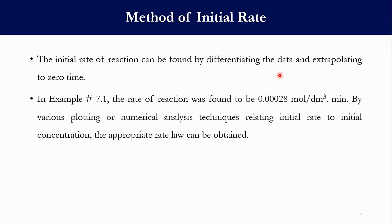For example, in example 7.1 the rate of reaction was found to be 0.00028 mole per cubic decimeter per minute. If we plot it, we have -Ra0 = K·Ca0^α, and when we take natural log of it, it becomes ln(-Ra0) = ln(K) + α·ln(Ca0). Now this equation has become y = mx + c. So y is ln(-Ra0), x is ln(Ca0), α will be the slope of this line, and ln(K) will be the intercept.